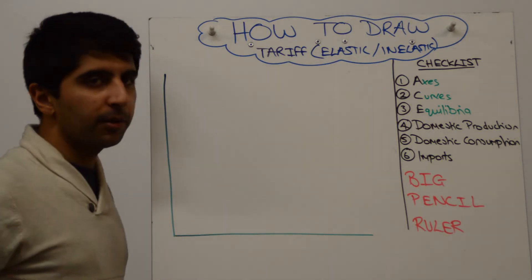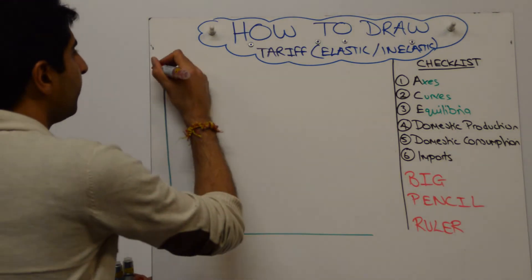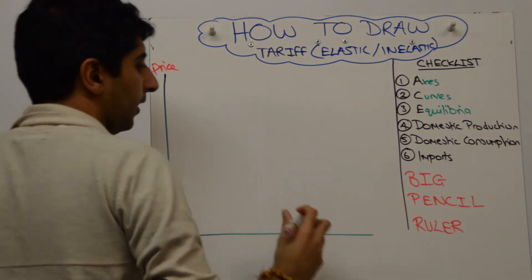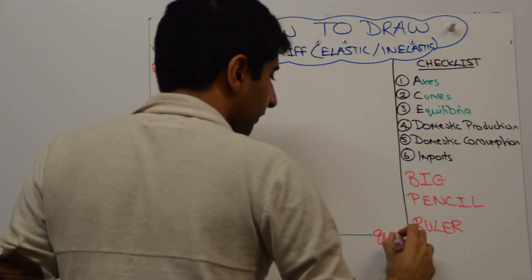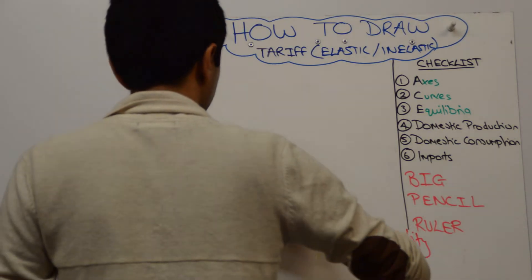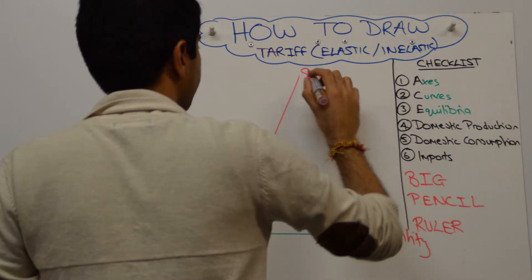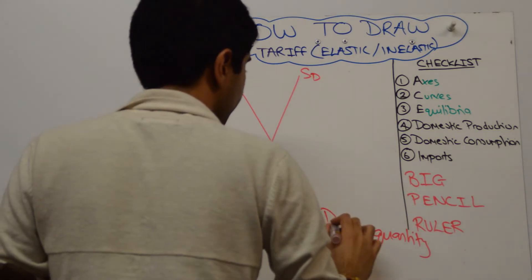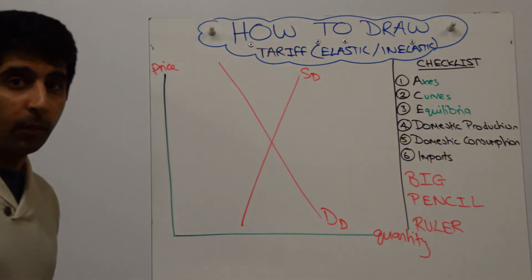Right, when there's inelastic demand and supply, how do you draw this diagram? Well, we start with the price on the y-axis and quantity on the x-axis. Then you want to draw your demand and supply quite steep. So domestic supply and domestic demand steeper than what we're used to drawing.